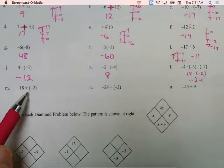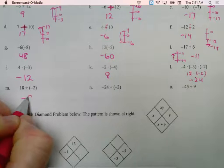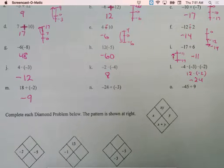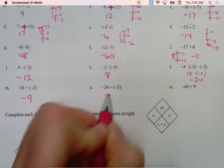18 divided by a negative 2. That's going to be a negative 9. All right. Different signs. Same signs, so we're going to have a positive answer.